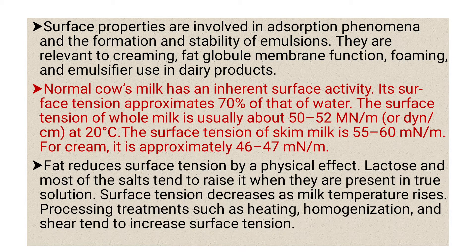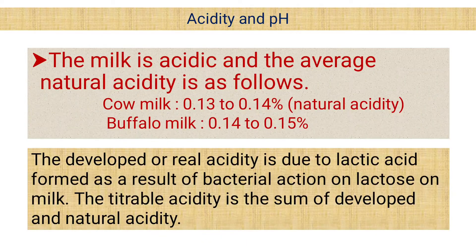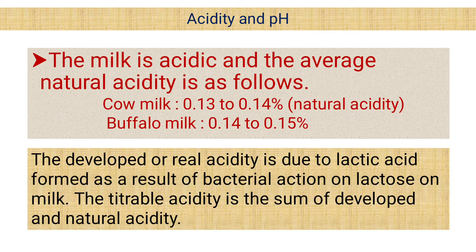The next property is acidity and pH, which are very important chemical properties of milk. Milk is acidic, and the average natural acidity values are as follows: cow milk has 0.13 to 0.14% natural acidity, buffalo milk has 0.14 to 0.15% natural acidity. Developed or real acidity is due to lactic acid formed as a result of bacterial action on lactose in the milk.